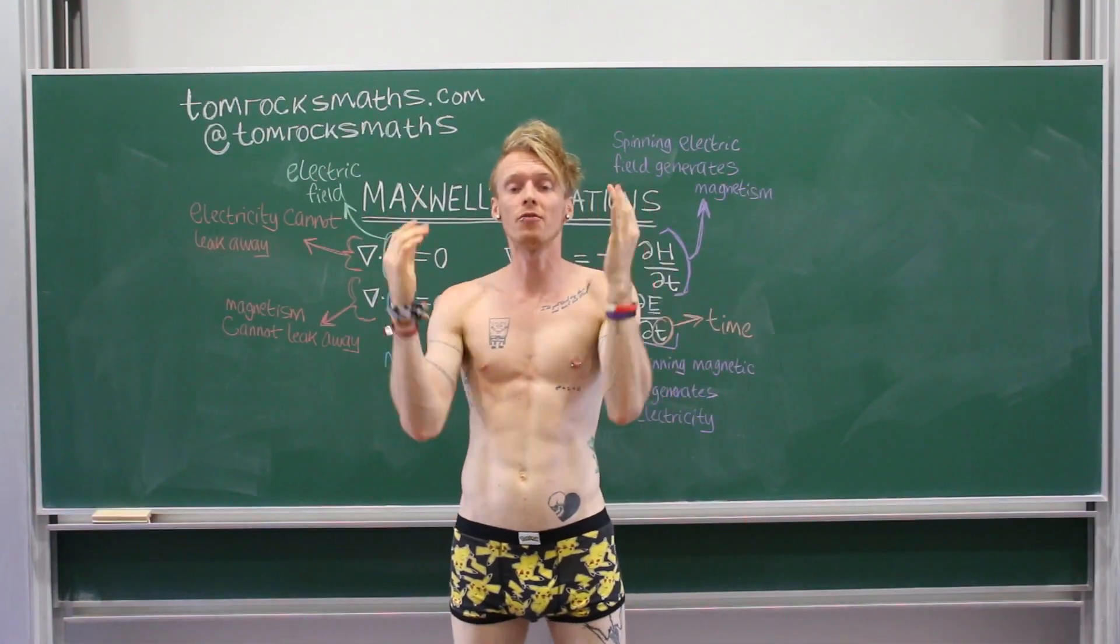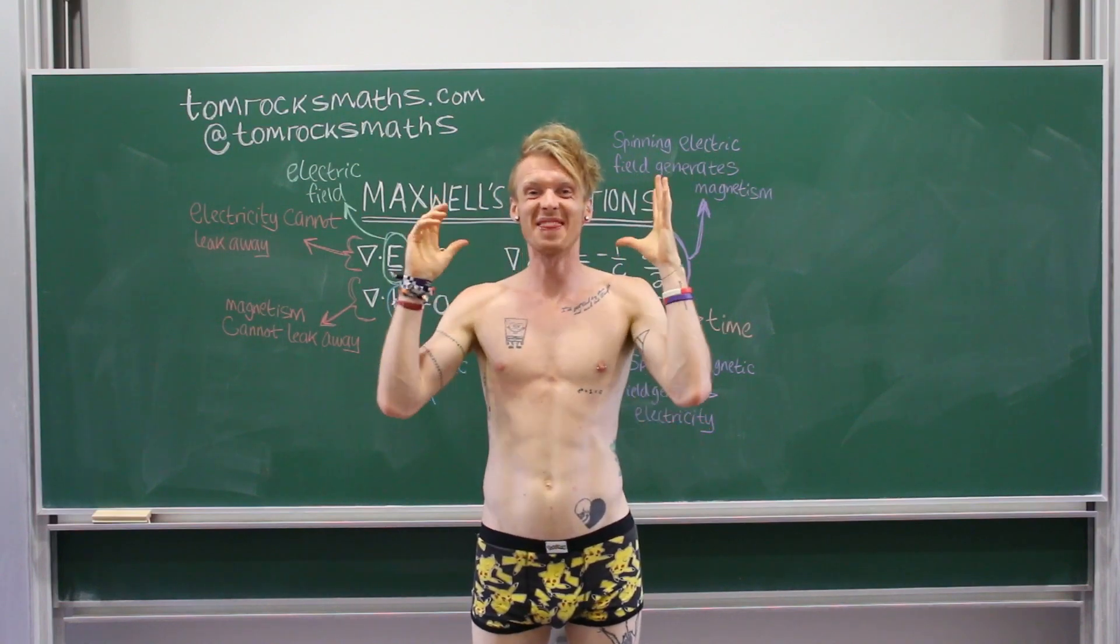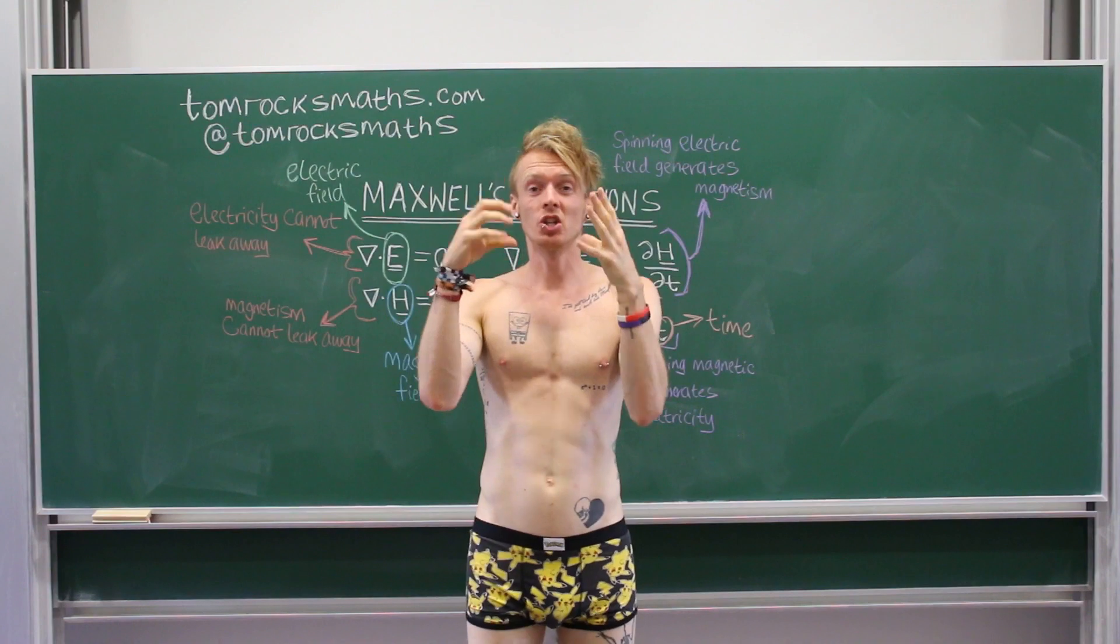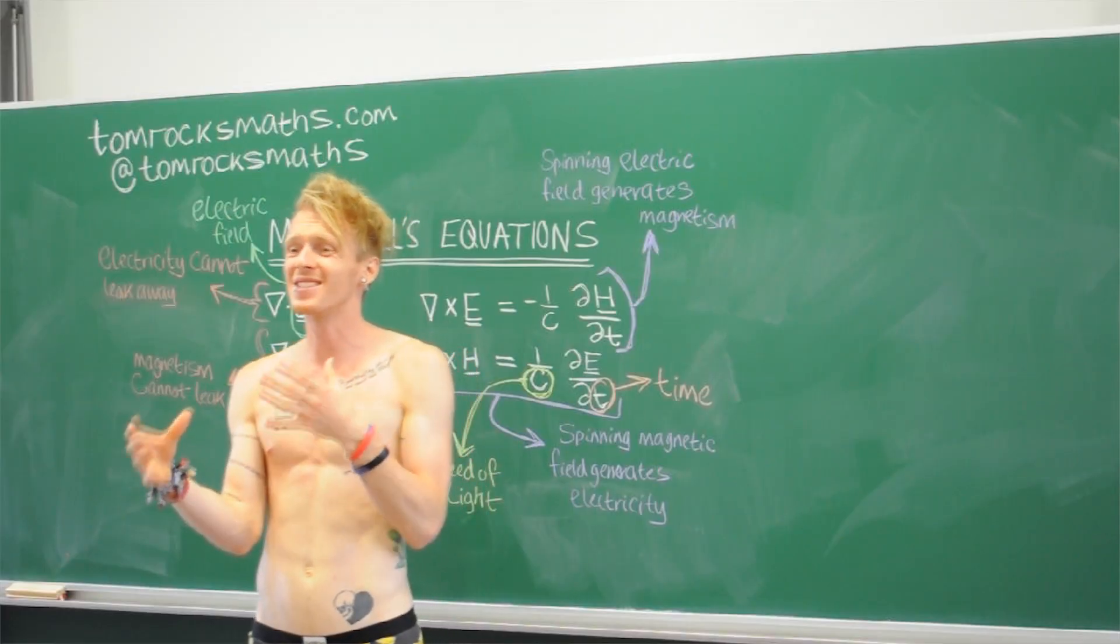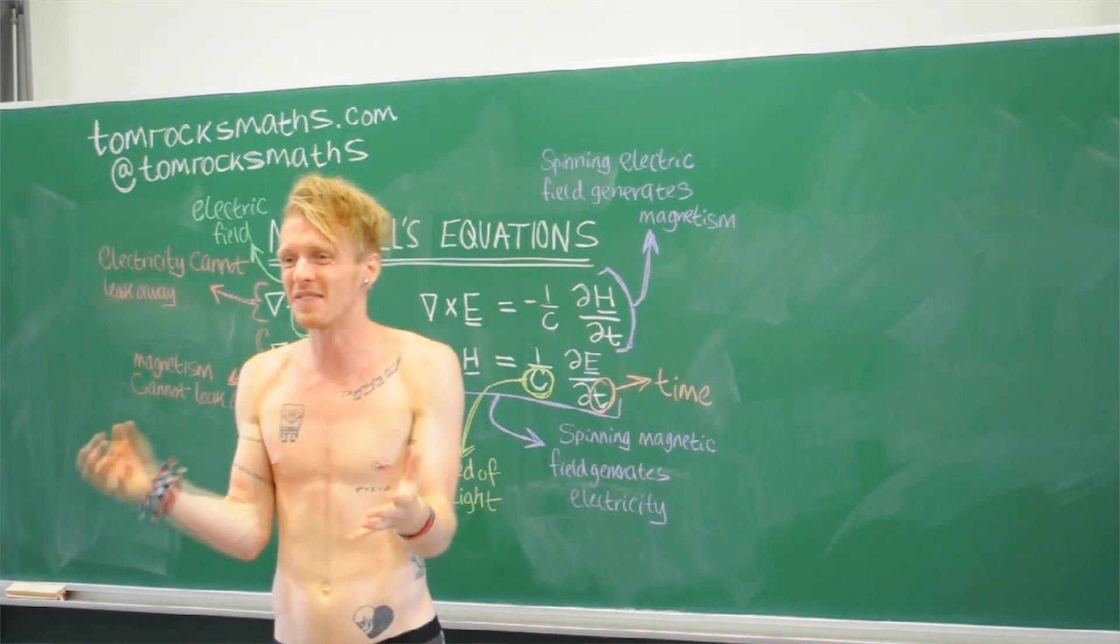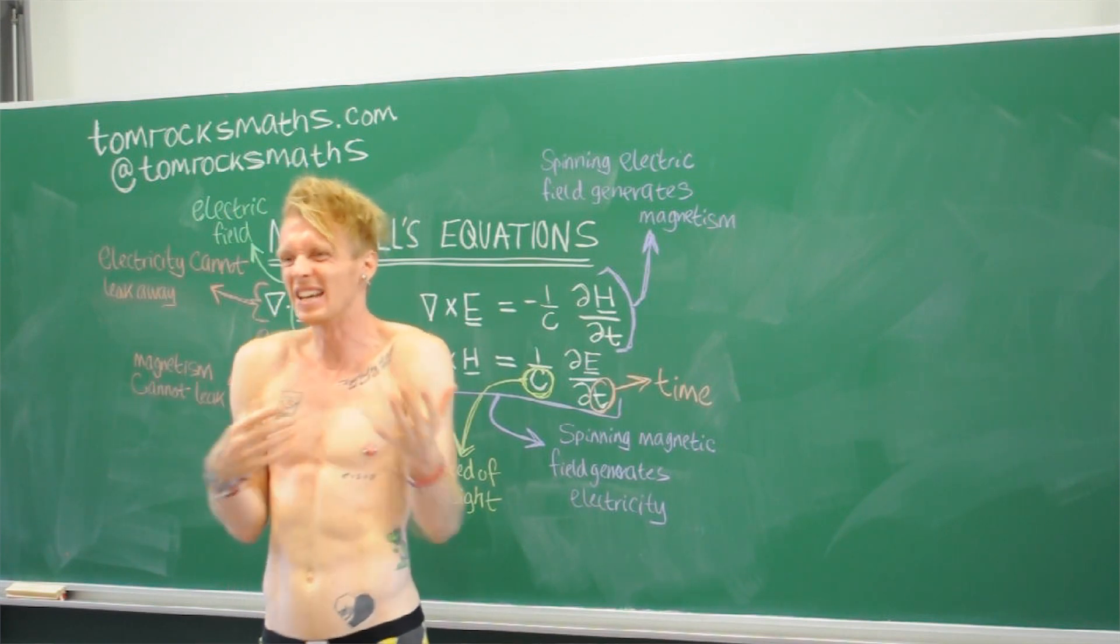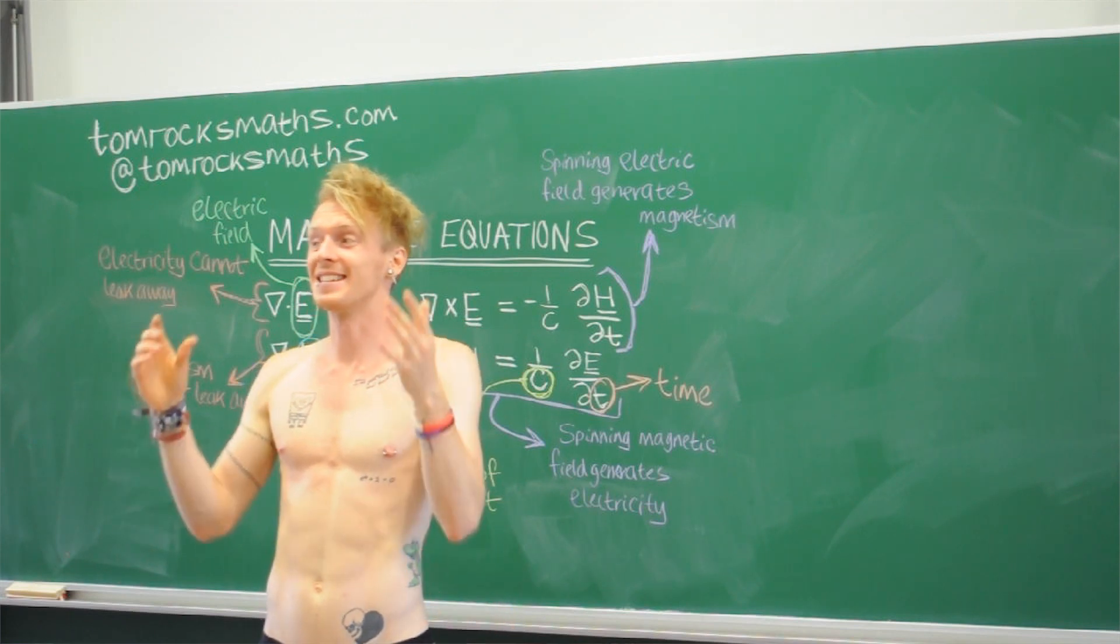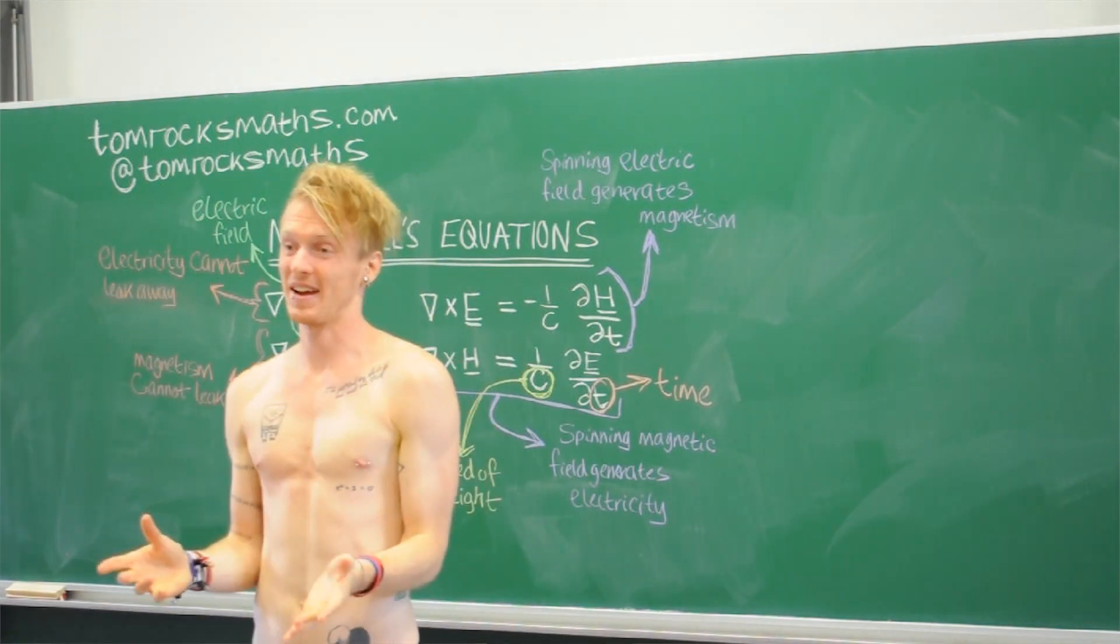We've now slipped down to our fourth and final layer of Maxwell's equations, and this is the big one. This is where Maxwell's equations show that light is a wave. Since the time of Newton, scientists had sort of known, or sort of thought, that light was a wave. They just didn't really know exactly what kind of wave, or what was really going on. And then Maxwell wrote down his equations, and everything just fell into place. It all just made perfect sense.